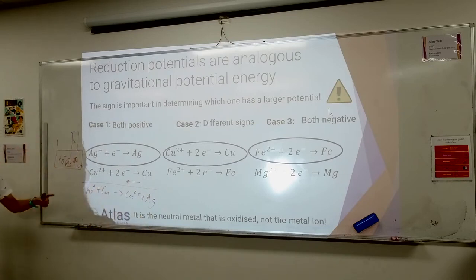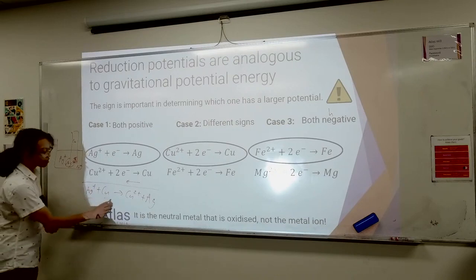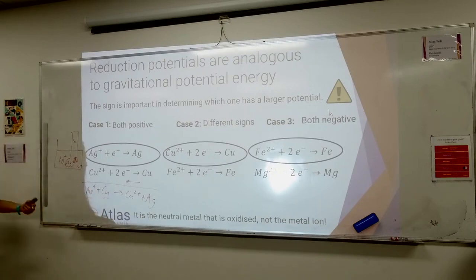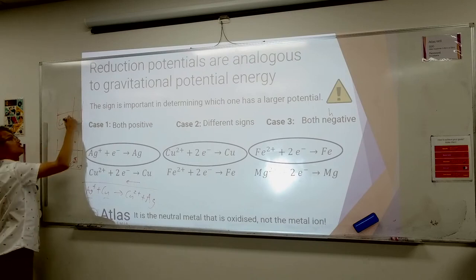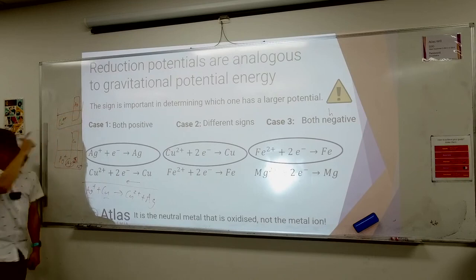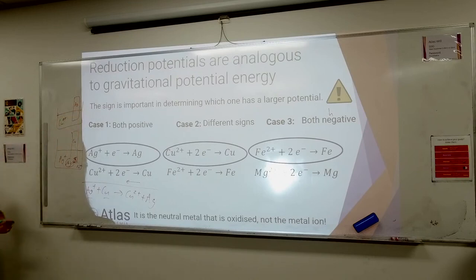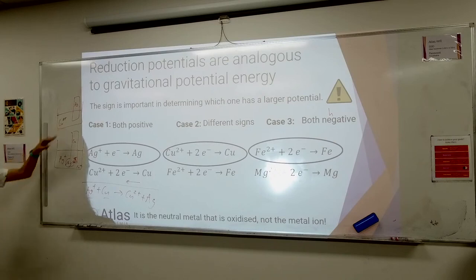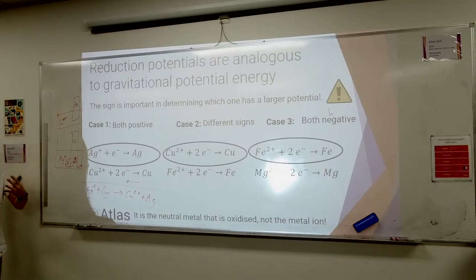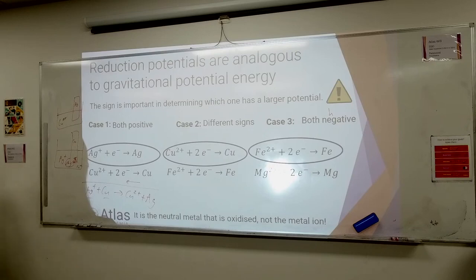Note this is assuming you have both silver plus ions and copper metal available. What if I flipped it? What if I have a beaker of copper two plus ions and silver metal? Nothing's going to happen. Copper is not good enough at reducing, or equivalently silver is not good enough at oxidizing - those are both the same way of saying it. So you need to get it the right way around.